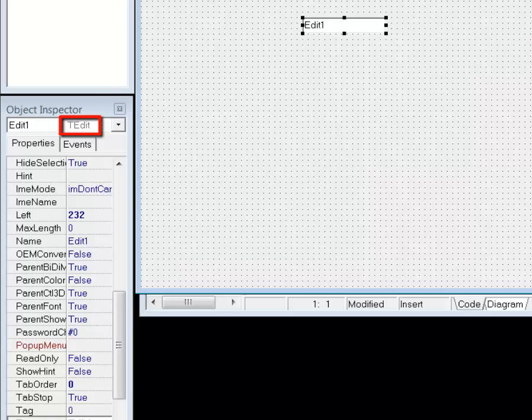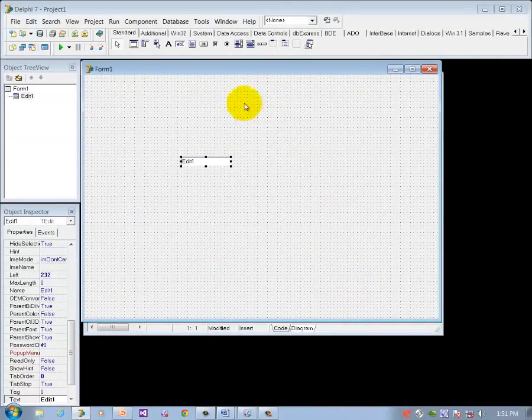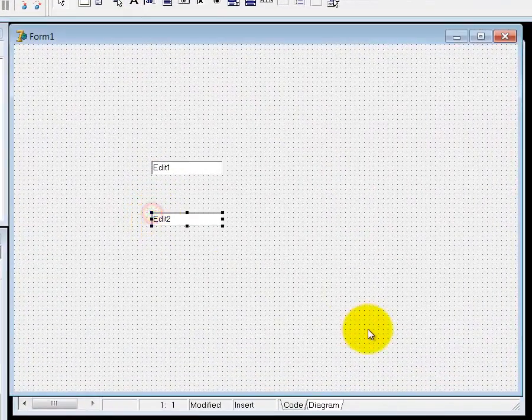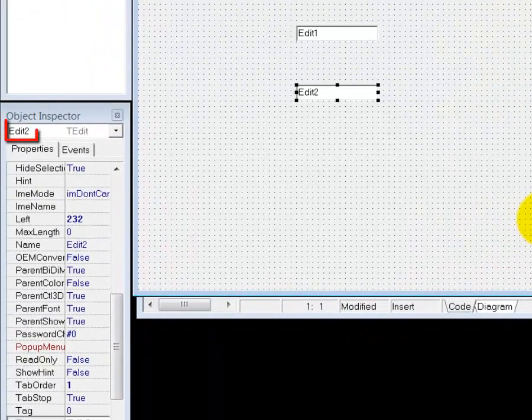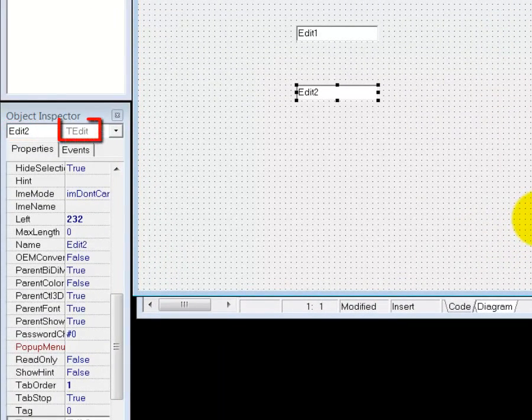Let me add a second instance of the TEdit class on the form. This instance is named edit2. Here I can see that it was instantiated from the same class as edit1.